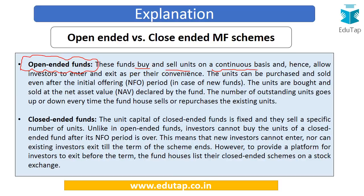Open-ended mutual fund schemes are always open — investors can enter by buying units and exit by selling units on a continuous basis, as per their convenience. Buying and selling takes place at the net asset value declared by the fund. An important point is that the number of outstanding units goes up or down because some investors are buying units and others are selling, so it does not remain constant.